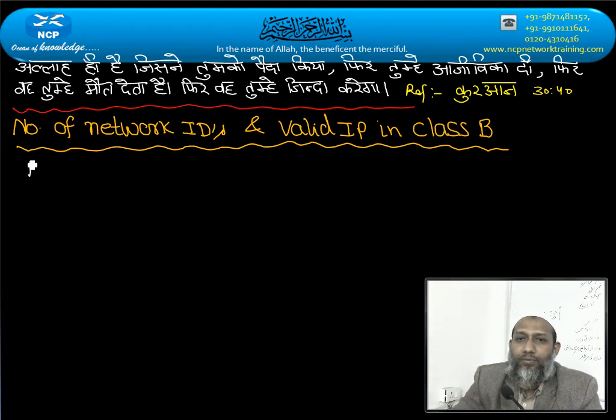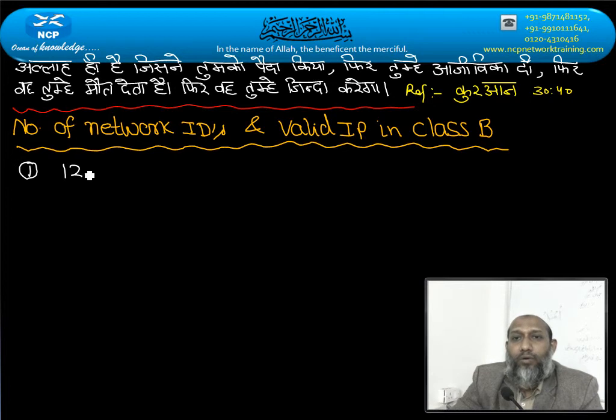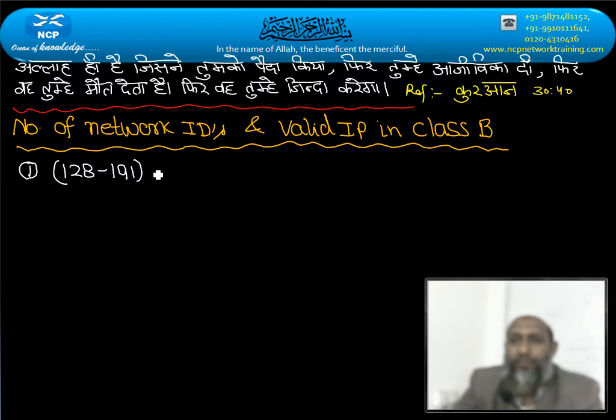Step number one, class B range is what? 128 to 191, first octet, second, third and fourth octet, 0 to 255.